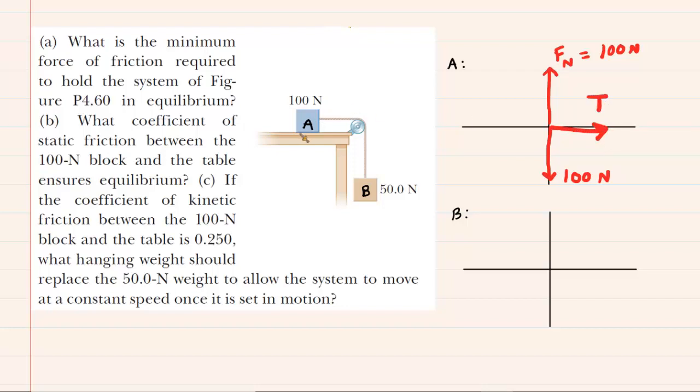So we can call that T. And then, of course, there's going to be some friction between block A and the table surface. We're going to direct that backwards, and we're going to call that F with a subscript F to represent force of friction.